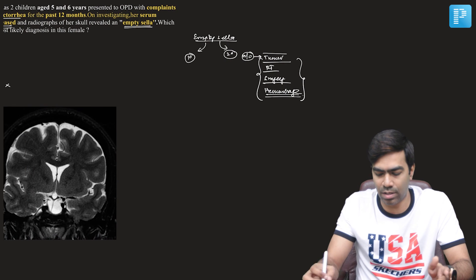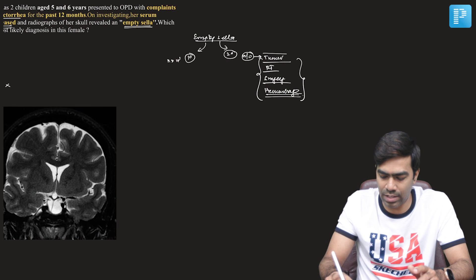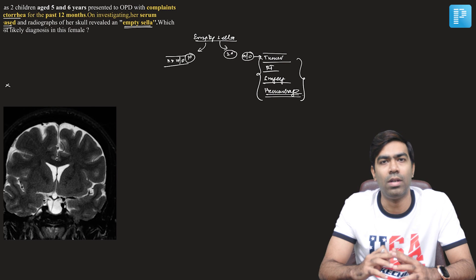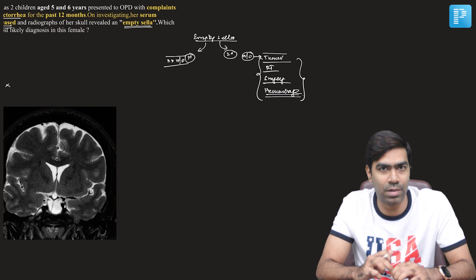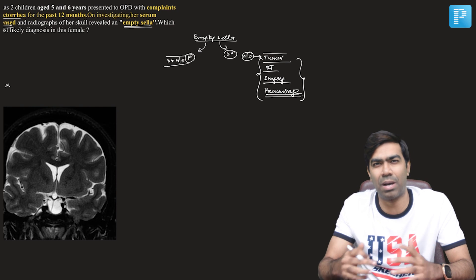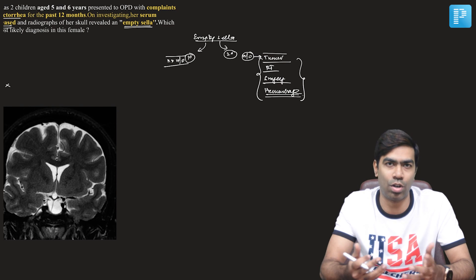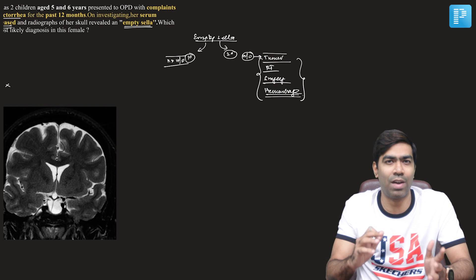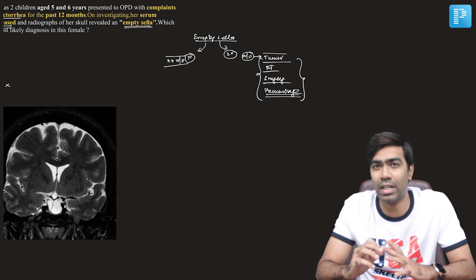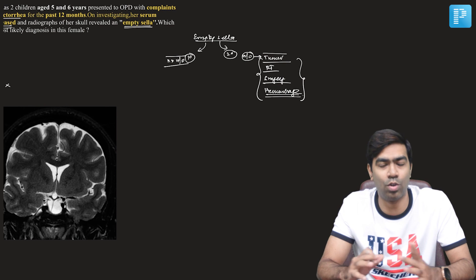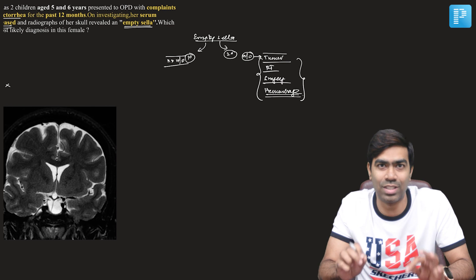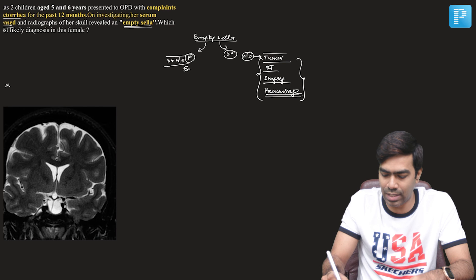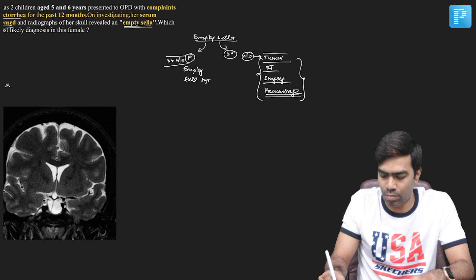What is primary empty sella? You do not have a history compatible enough to explain an empty sella on imaging — that is what we call primary empty sella. Whether this term is applicable in reality is controversial, but if you have a primary idiopathic presentation with no clinical history and no background, yet still have an empty sella on imaging, this is what we call empty sella syndrome.